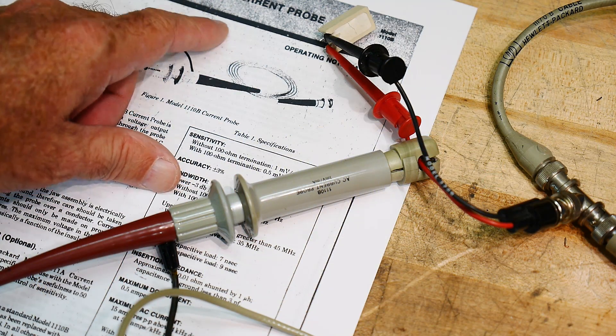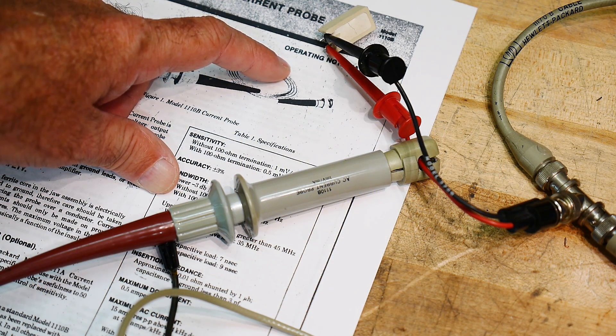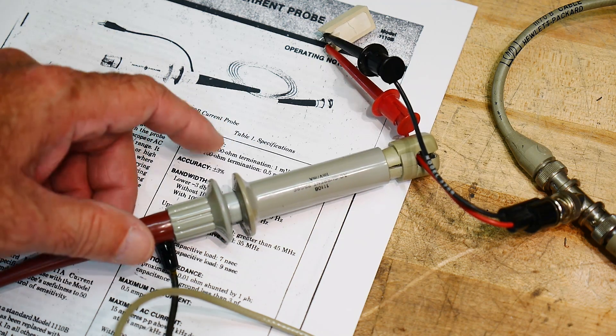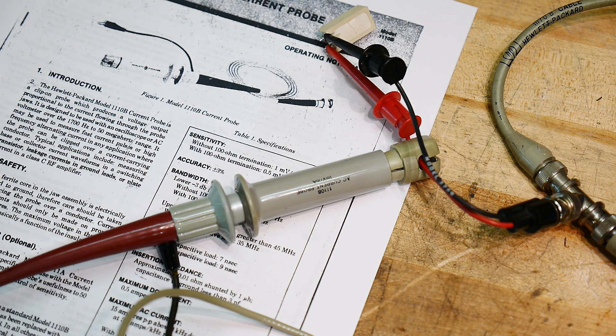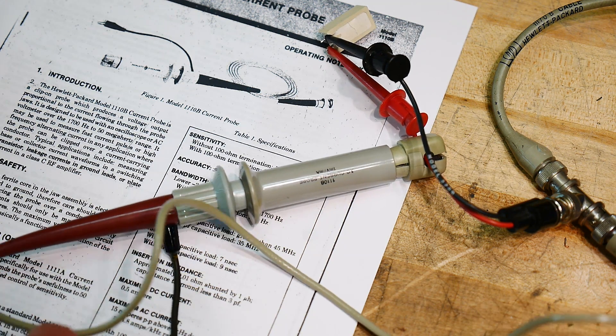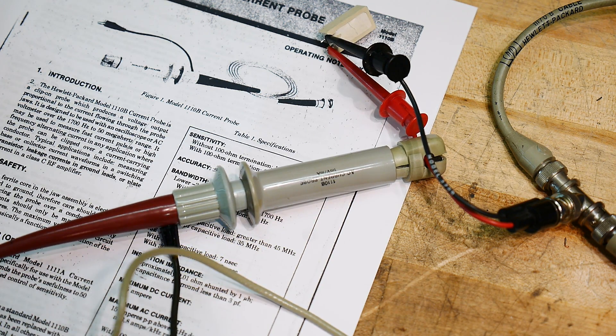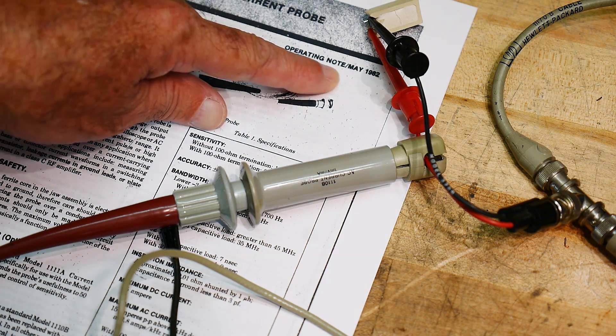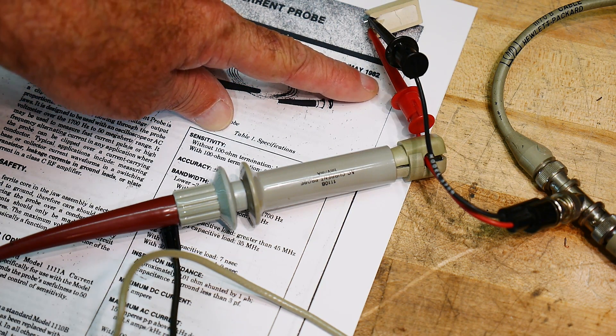So that was it. This is the HP 1110B current probe. It looks pretty vintage. What's the date on this publication here? Do I see a date? Operating note 1982.